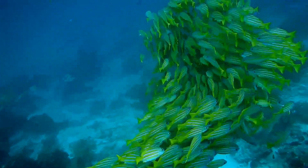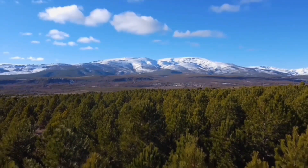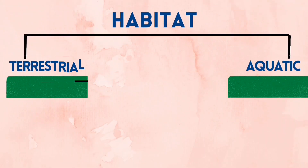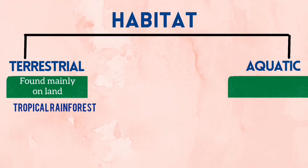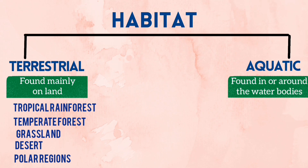All the habitats are divided mainly into two groups: terrestrial and aquatic. Terrestrial habitat is a land-based habitat. Main examples of terrestrial habitats are tropical rainforest, temperate forest, grassland, desert, and polar regions. Aquatic habitat is a water-based habitat, and it is of two types: freshwater and marine.